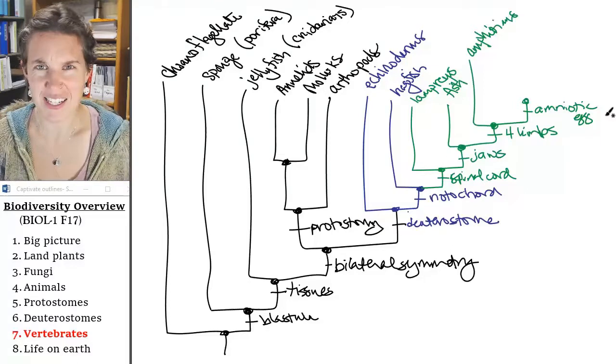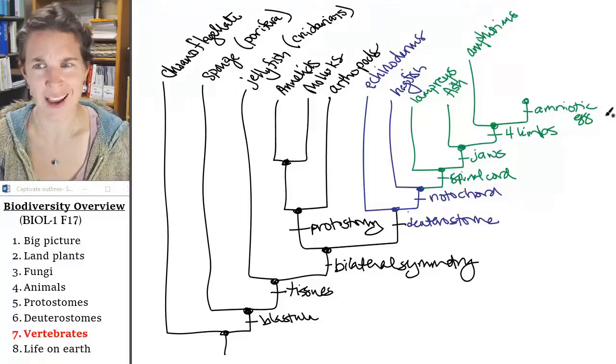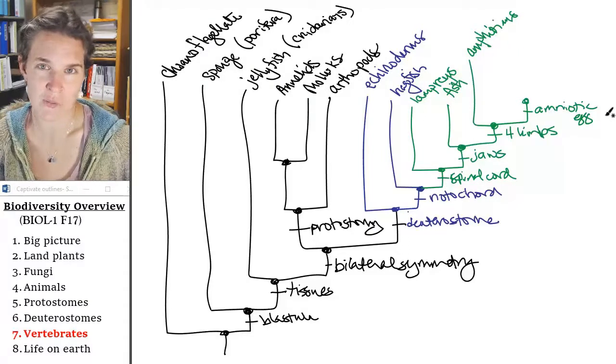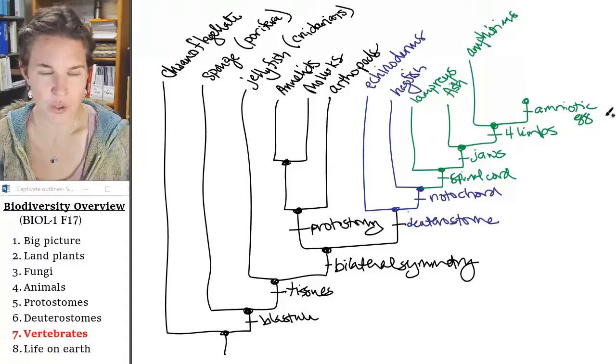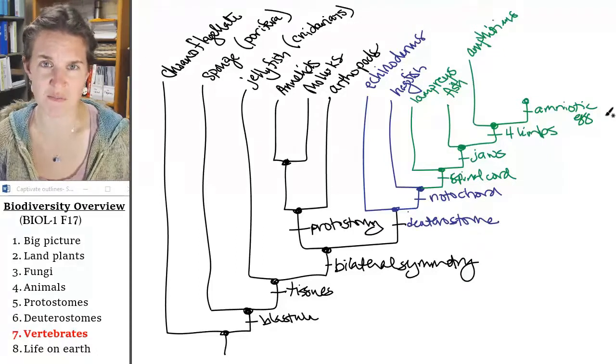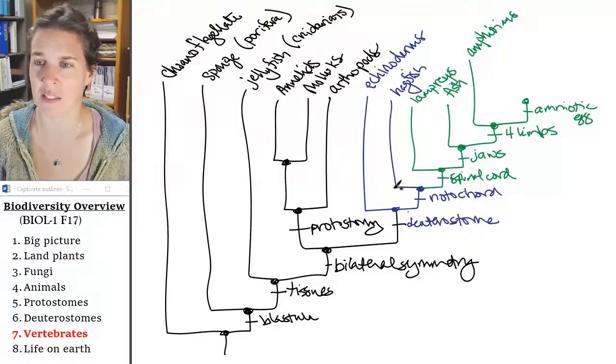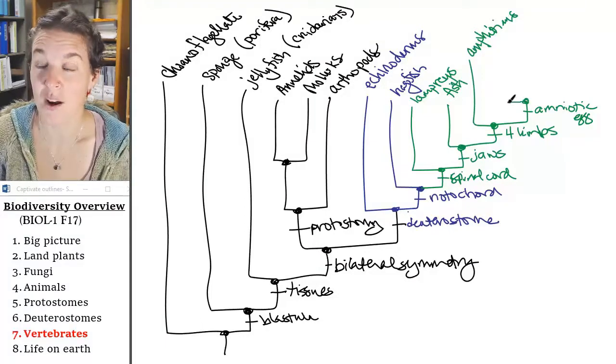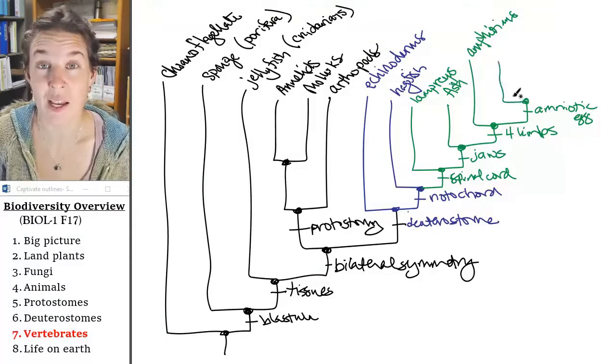And the advantage of an amniotic egg, like how awesome is this? You can take your baby. You don't have to lay your egg and then stand around and protect it. You can actually just, it's posted up inside you, and you can take it wherever you need to go, and it makes you feel massive and awesome. So yes, mammals do have an amniotic egg.